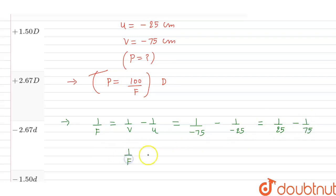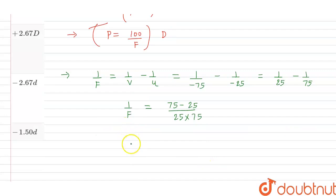So 1 divided by f equals 75 minus 25 divided by 25 into 75. So after solving this we get f which is equal to 37.5 cm.